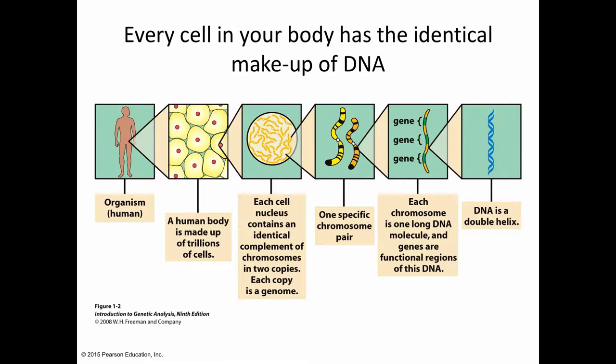That information is found on each of our chromosomes. We have pairs of chromosomes found in the nucleus, and each nucleus of all cells contains an identical complement of chromosomes in two copies — each copy referred to as a genome. The human body is made up of trillions of cells, and what we're trying to understand is how messages get extracted from the DNA molecule and ultimately direct the production of proteins.